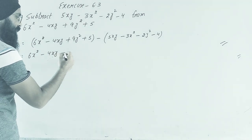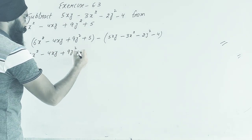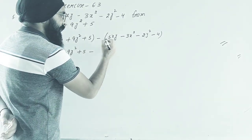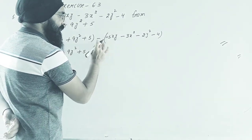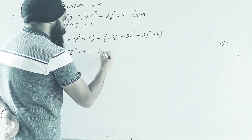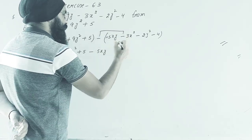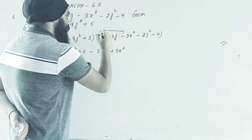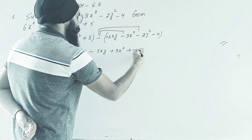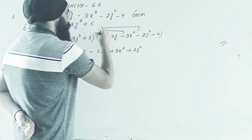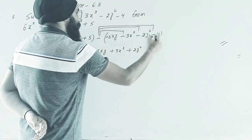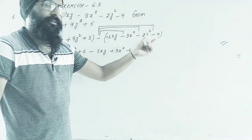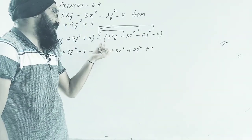Here we have 6x square minus 4xy plus 9y square plus 5, bracket open. When we apply minus to the bracket, signs change: minus minus becomes plus, so 5xy becomes minus, minus 3x square becomes plus 3x square, minus 2y square becomes plus 2y square.